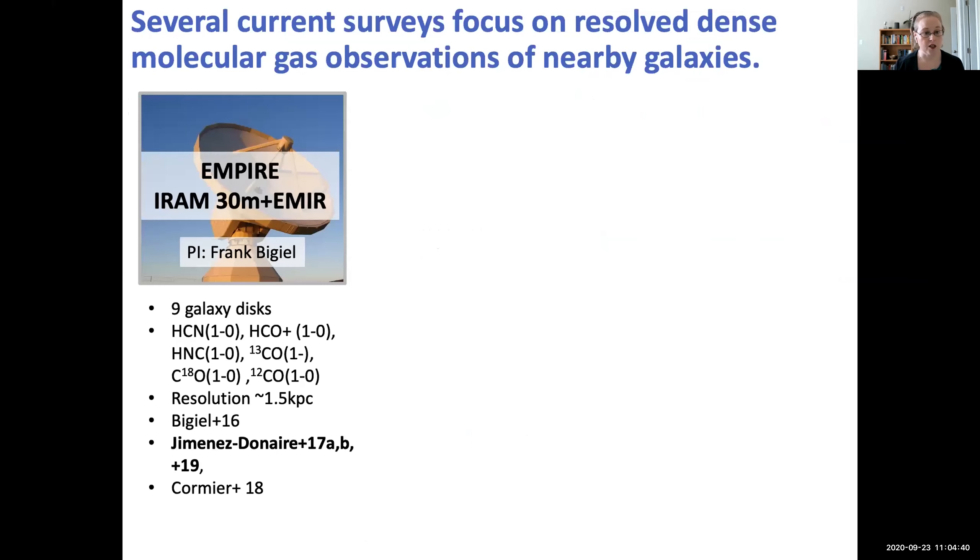So the first one is called EMPIRE, which is IRAM 30 meter plus EMIR. It's PI'd by Frank Bigiel. And what they did is mapped nine galaxy disks at a resolution of 1.5 kiloparsec. And I encourage you to look at Maria Jimenez Donaire's 2019 paper for a full description of that survey. So the nice thing about EMPIRE is they got the whole disk, but the resolution is only so-so.